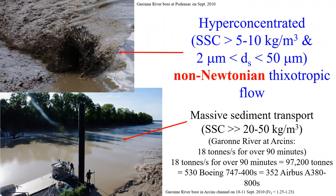Not only are we dealing with very high sediment concentration, but we are dealing with fine material — sediment size between 2 to 50 microns in the Garonne River and in the Bay of Fontenay. This leads to a sediment-laden water solution with non-Newtonian thixotropic properties. We are dealing with a sediment-laden water solution that behaves very much like cosmetic cream or tomato ketchup, rather than a traditional Newtonian fluid. This means that in terms of modeling, we need, in addition to the continuity and Navier-Stokes equations, to introduce a constitutive law for this non-Newtonian solution — a constitutive law that we don't know.